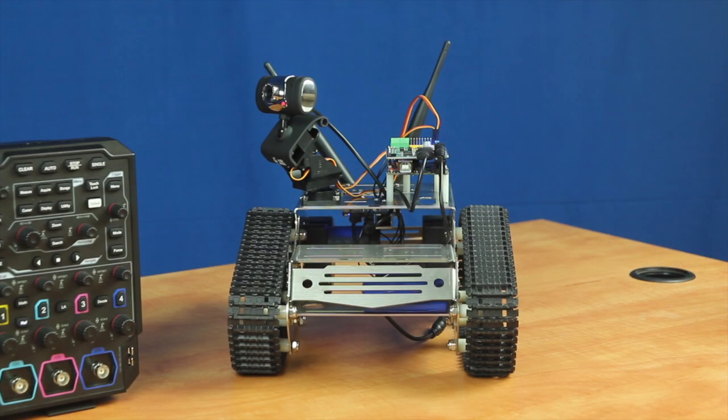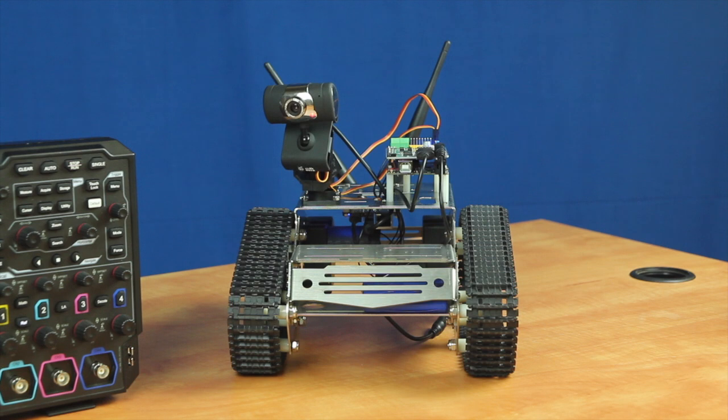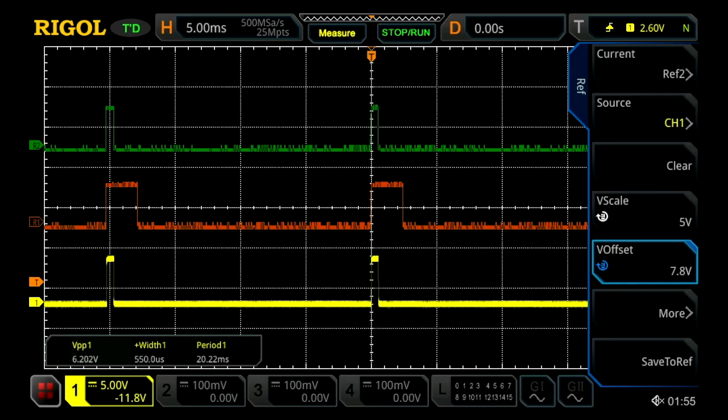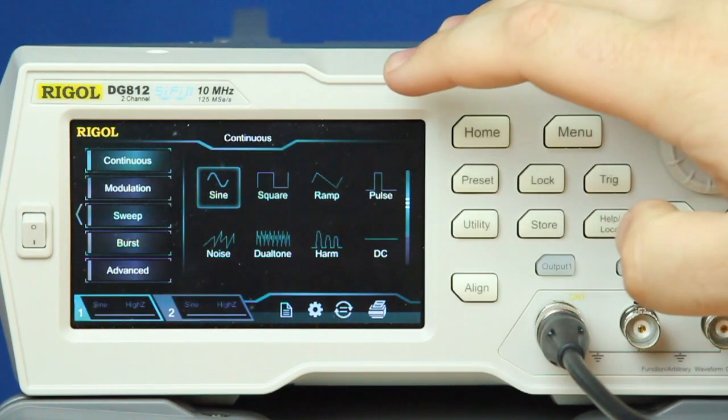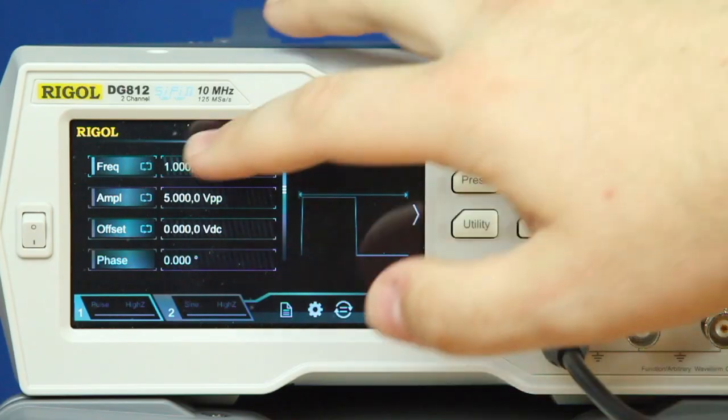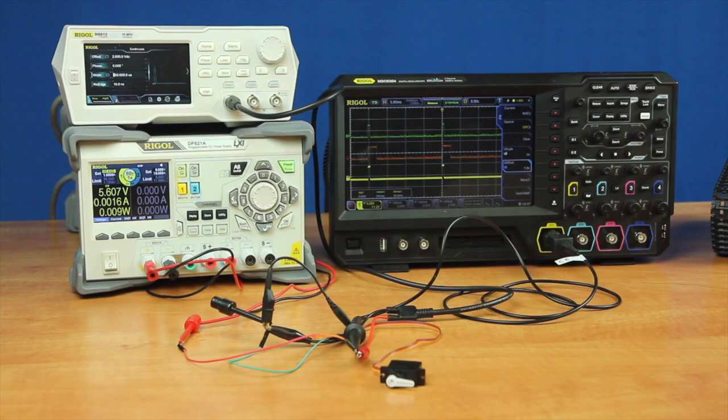Next we installed the robot's camera while gaining an understanding of how the different motors in the camera arm operate. To test these motors we used an oscilloscope to monitor the pulse width, a waveform generator to create the pulses to control the motors, and a power supply to power the motors.